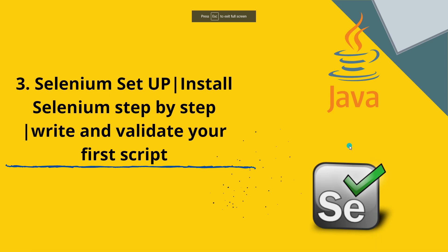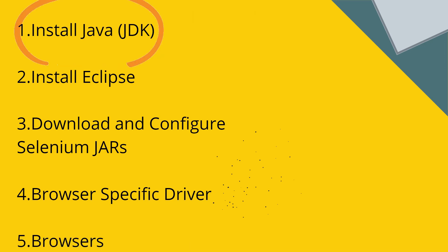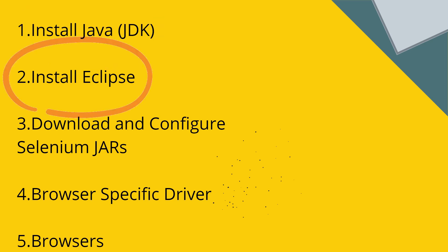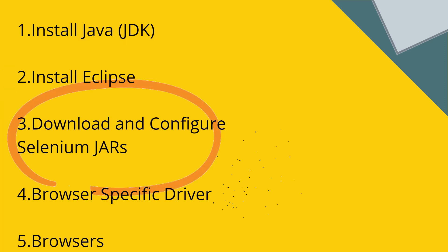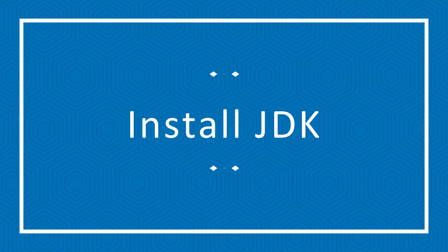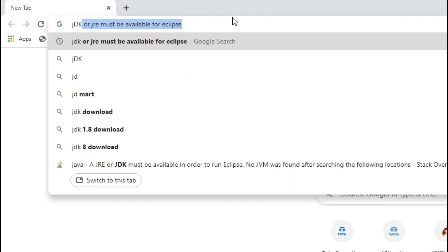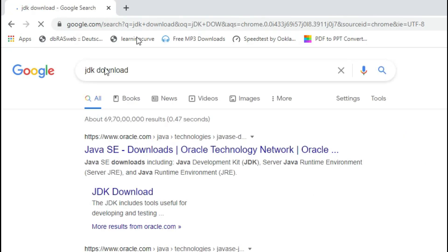Hi there, welcome to Quick Auto. I am Mona Lisa Panda. Let's get started. Setting up Selenium, assuming Java as the backend language, involves a five-step process: first install JDK (Java Development Kit), then an IDE that supports writing test cases in Java — here I am using Eclipse — then download and configure Selenium JARs, followed by writing and running the first test case, and finally browser-specific drivers and browsers.